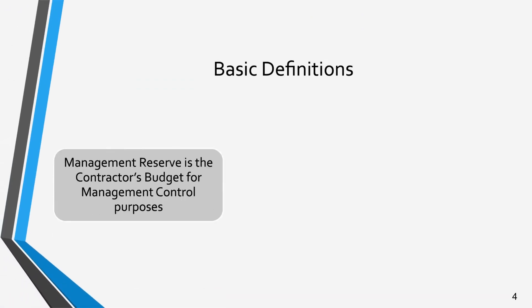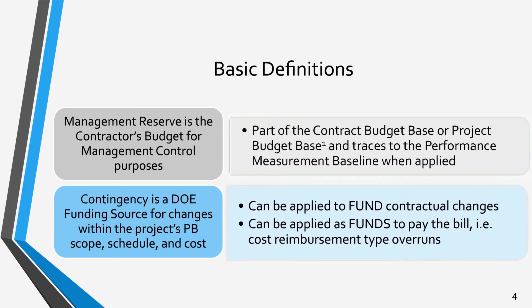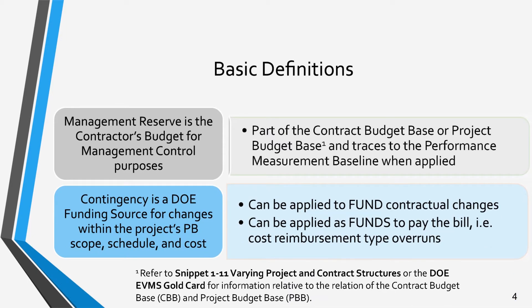Before we dive into the details of these concepts, we will provide some top-level definitions of each. Management Reserve is the contractor's budget for management control purposes. This budget is a part of the contract budget base, or project budget base, and is applied to the performance measurement baseline when authorized internal changes are made.